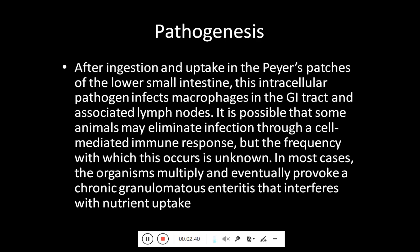Coming towards the pathogenesis, after ingestion and uptake in the Peyer's patches in the lower small intestine, this intracellular pathogen infects macrophages in the GI tract and associated lymph nodes. It is possible that some animals may eliminate infection through a cell-mediated immune response, but the frequency with which this occurs is unknown. In most cases, the organism multiplies and eventually provokes a chronic granulomatous enteritis that interferes with nutrient uptake, leading to debilitation and weight loss.